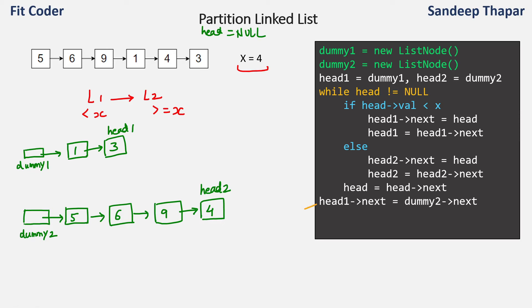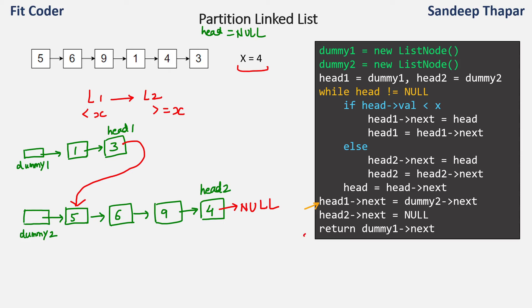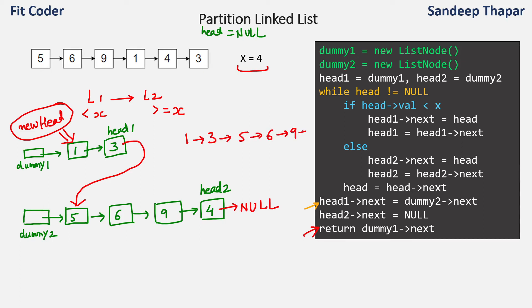After the loop, we set next of head1 to next of dummy2. So node 3 now points to node 5, because 5 is next of dummy2 — this links the first linked list with the second. Then we set next of head2 to null, making node 4 the last node. Finally, we return next of dummy1, which is node 1 — the new head of the partitioned linked list. The result is 1, 3, 5, 6, 9, 4.